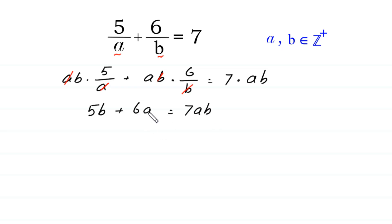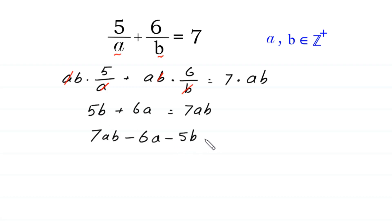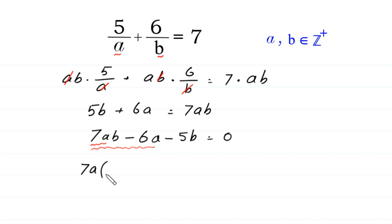Now we move 6a and 5b to the right side: 7ab minus 6a minus 5b is equal to 0. From the two terms 7ab minus 6a, we factor out 7a: 7a times (b minus 6 over 7) minus 5b is equal to 0.